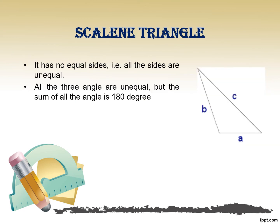Last but not the least, let us understand scalene triangle. Scalene triangle is a triangle which has all sides of different length, and hence all angles are of different measure. But the sum of all angles will always remain 180 degrees. In the image we have a triangle with sides A, B and C, where A is not equal to B and B is not equal to C — all three sides are of different length.